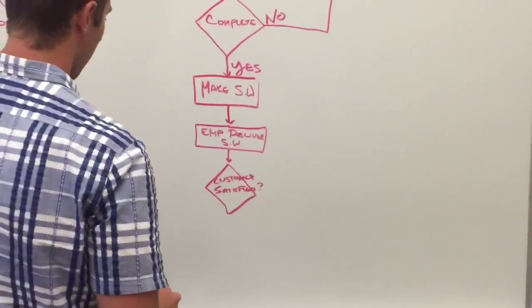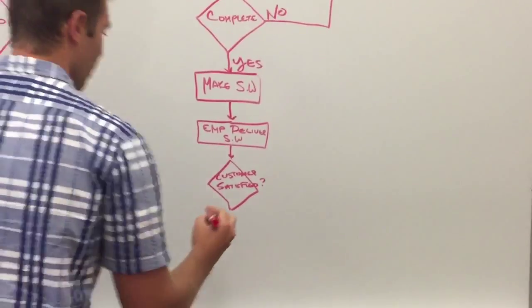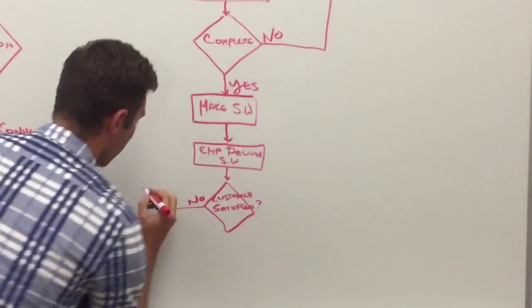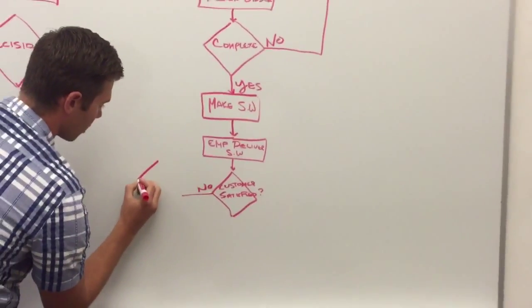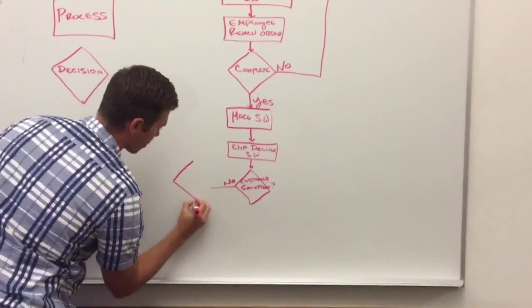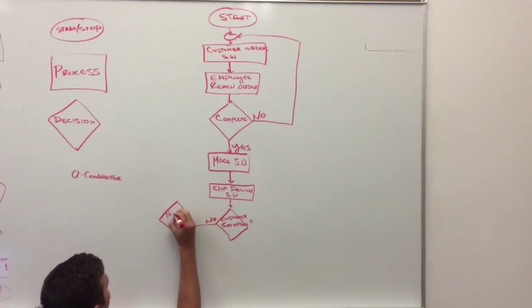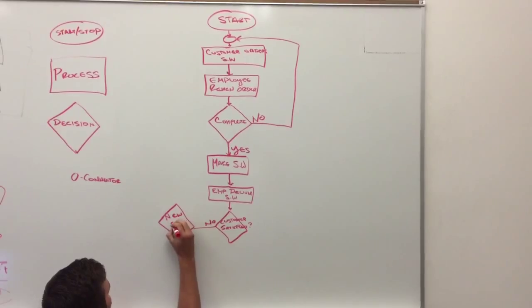So there's going to be two different outcomes out there, a yes or a no. If no, we're going to go out this way. We're going to have another decision asking, does the customer want a new sandwich? So we want a new SW.